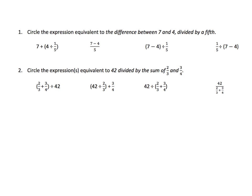This first problem says circle the expression equivalent to the difference between 7 and 4 divided by a fifth. So the difference between 7 and 4, that means we're looking for some subtraction. There's a subtraction right here, here's a subtraction, and here's a subtraction. But we don't know which one it's going to be yet.